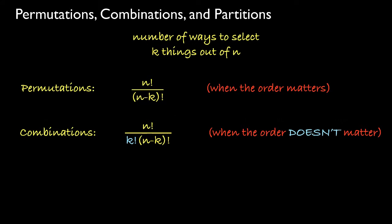In summary, there are two important formulas for permutations and combinations. When order matters, we call the k things a k-element permutation from the original n elements.